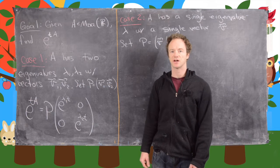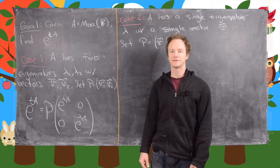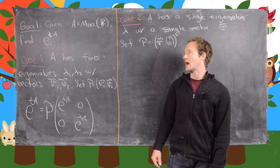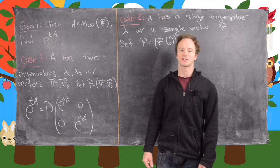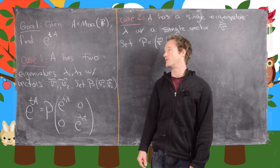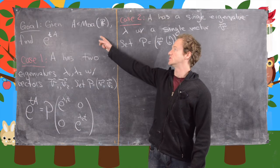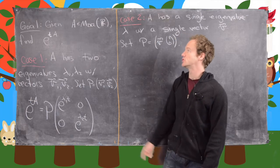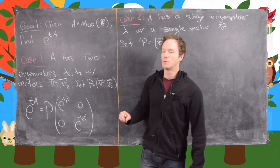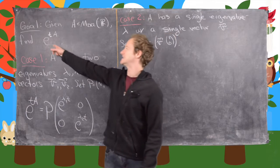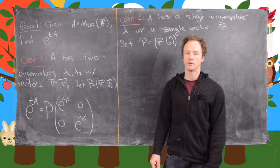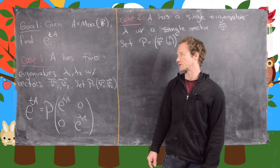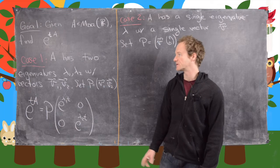In this video we're going to continue a discussion on some previous videos where we look at the matrix exponential. But now we're going to look at the matrix exponential with a variable. Given A, a 2 by 2 real matrix, we want to find E to the TA where T is a variable. This will be useful for solving systems of differential equations.